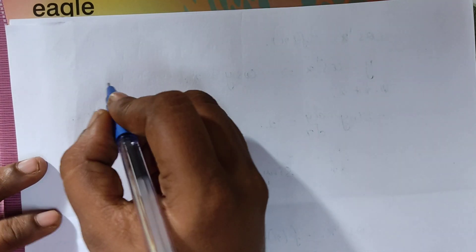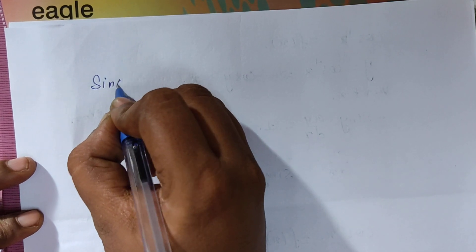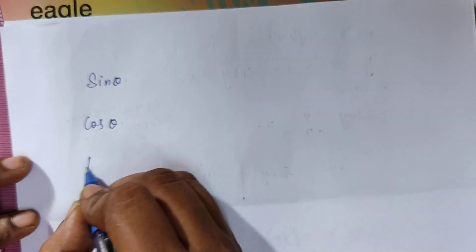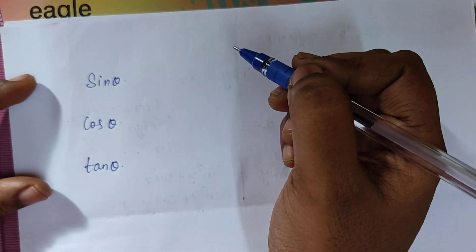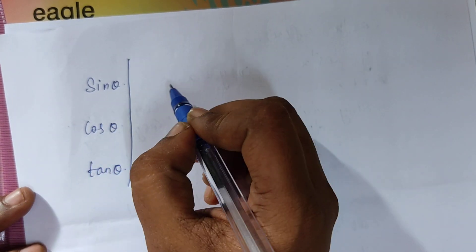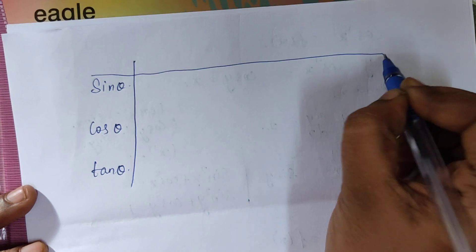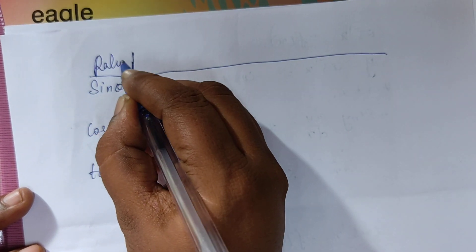In this video we will discuss a short trick to remember the trigonometric table. We will discuss trigonometric ratios up to 90 degrees. The three basic ratios are sin theta, cos theta, and tan theta. With these three ratios we can calculate the remaining three. We have six trigonometric ratios in total, but knowing the table values of these three is enough to calculate the remaining ratios.